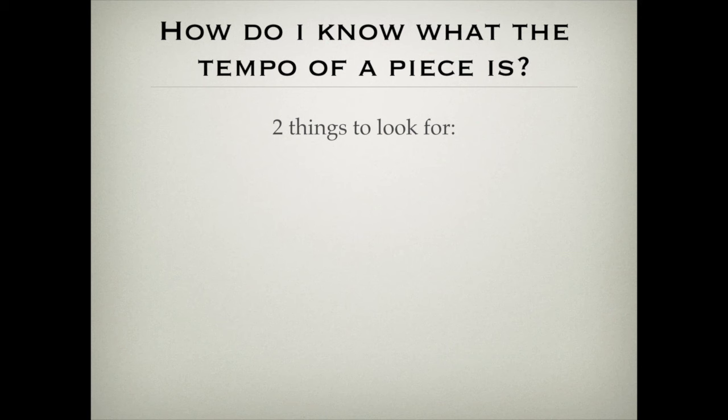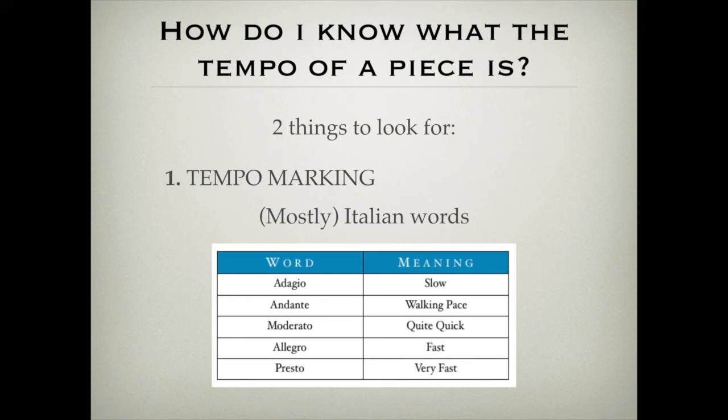So how do I know what the tempo of a piece is when I'm reading music? There are two things to look for. Firstly, there's a tempo marking. Tempo markings are mostly Italian words, although sometimes you'll see them in English or even other languages. They are a word written usually at the beginning of the piece of music just above the stave. Here are some typical words you might come across.